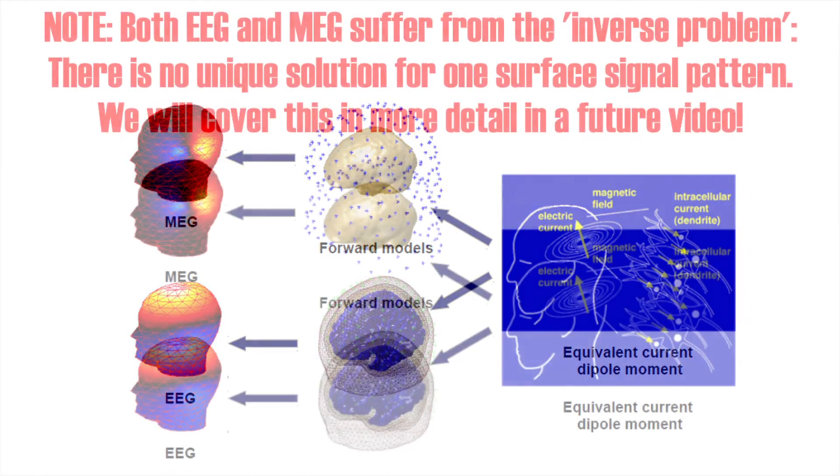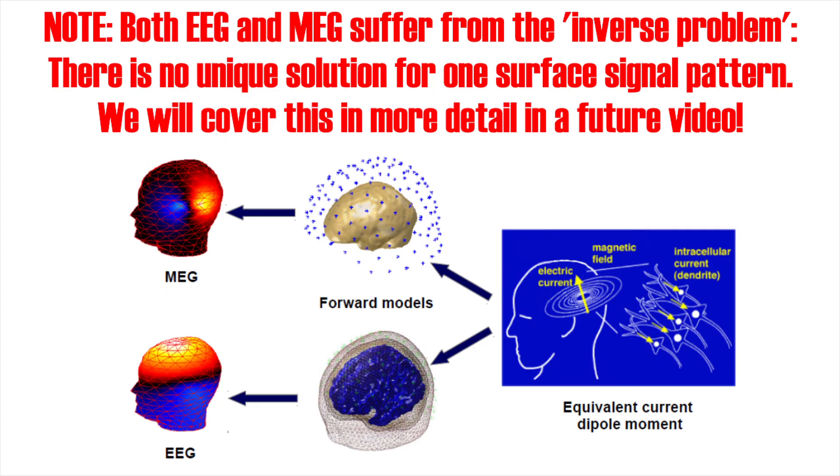With the large amount of MEG sensors, typically around 300 or even more, we can get a relatively good idea which brain areas are responsible for recorded MEG signals.